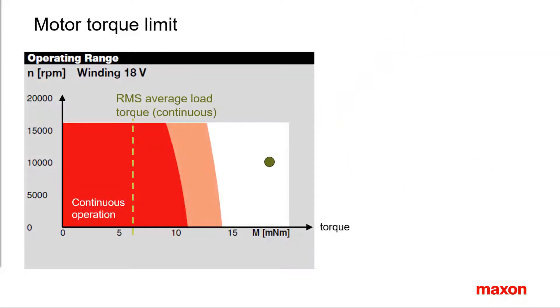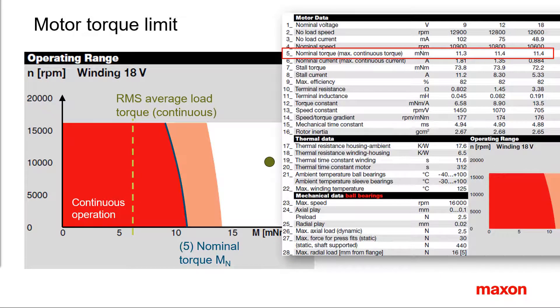We need a motor that can produce the necessary torques: a continuous torque corresponding to the average load and the torque for short-term operation that we will cover later. The steady-state torque capability of the motor is represented as the continuous operating range limit in the diagram. It corresponds to the nominal torque in line 5 of the motor data.